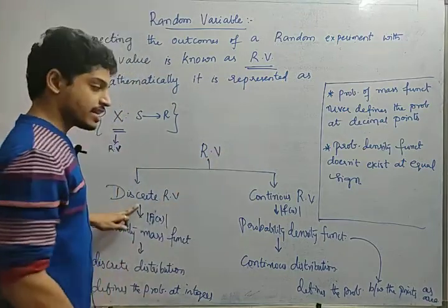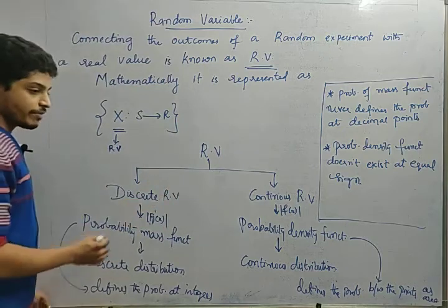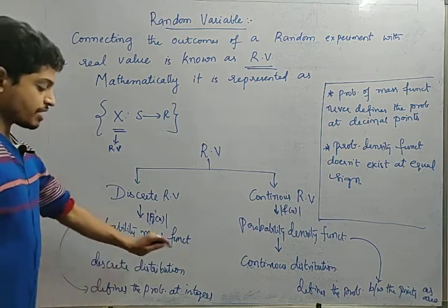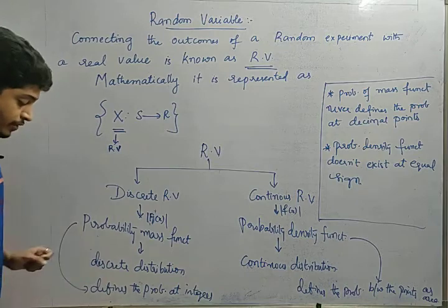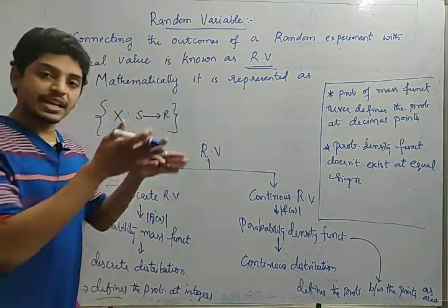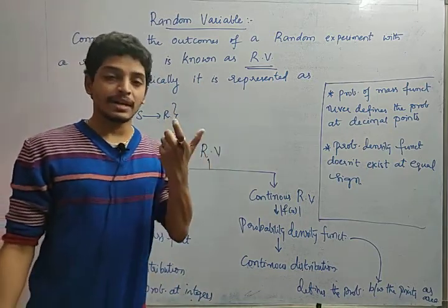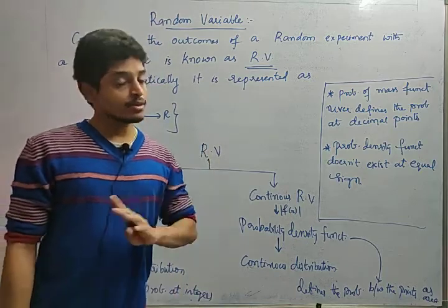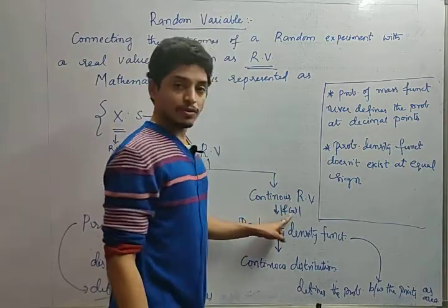Random variables are of two types: discrete random variable and continuous random variable. For a discrete random variable, when we list these values and their corresponding probabilities we get the probability mass function, and this is called a discrete distribution. The probability mass function defines probability only at integer values — for example, P(X=3) or P(X=4) — at particular integers only. At decimal values, the probability is not defined.